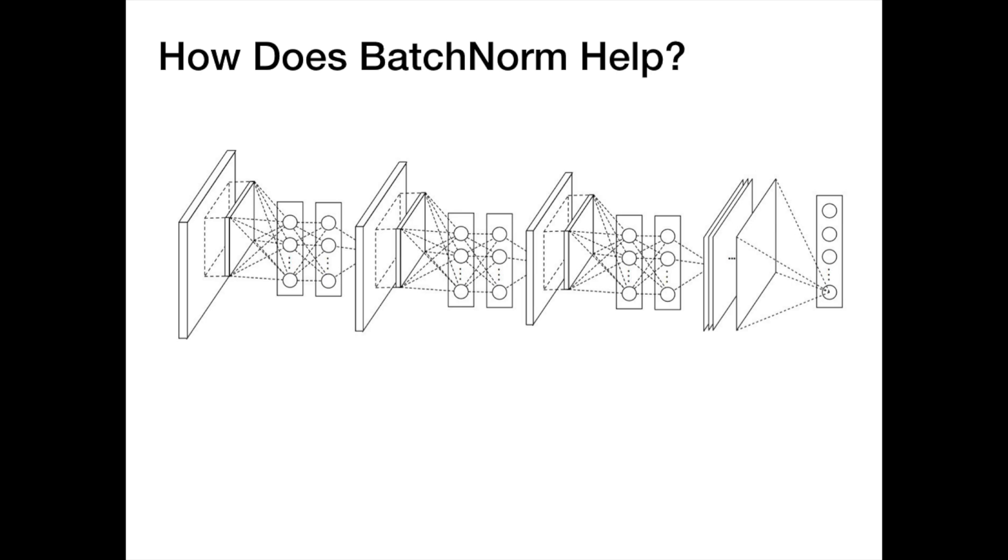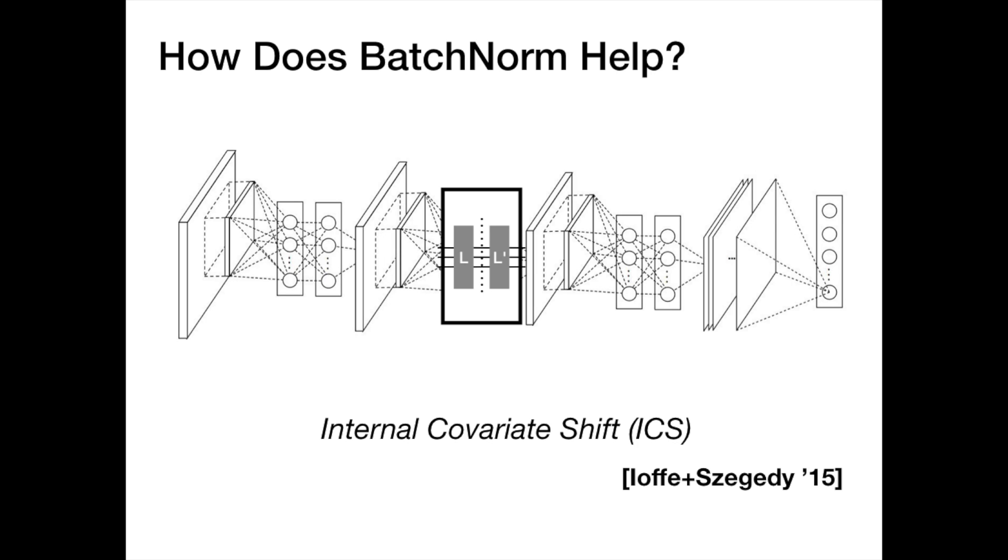So how exactly does batch norm help optimization? It's believed that batch norm helps by alleviating something called internal covariate shift. The idea here is that constant changes in a layer's input distribution caused by updates to previous layers makes optimization hard. Batch norm tries to reduce this effect by controlling the mean and variance of layer activations.